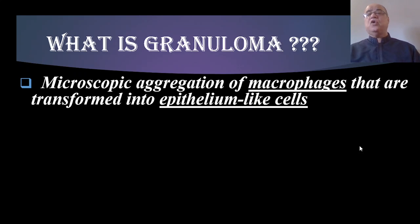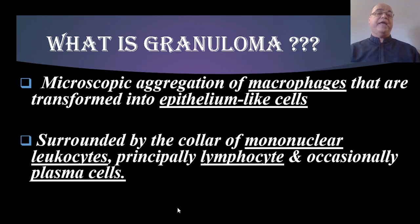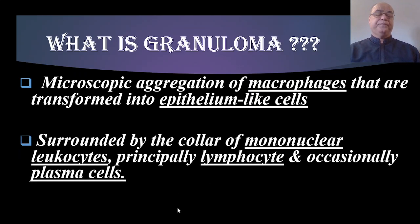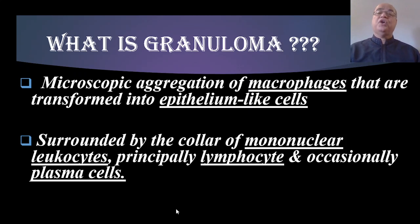This aggregation of macrophages, which are transformed into epithelioid cells, is surrounded by a collar of mononuclear leukocytes — principally lymphocytes and occasionally plasma cells. This is the basic histopathological presentation of a granuloma.